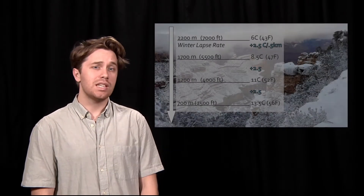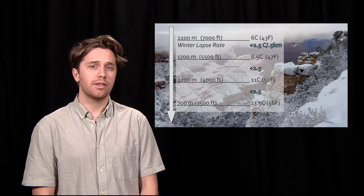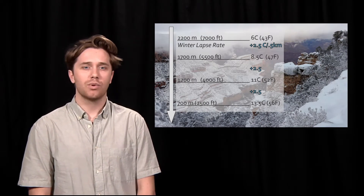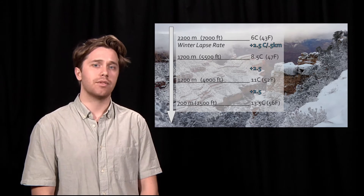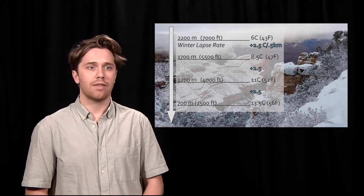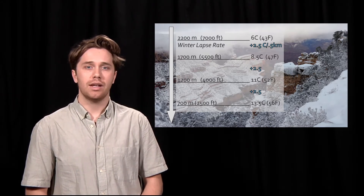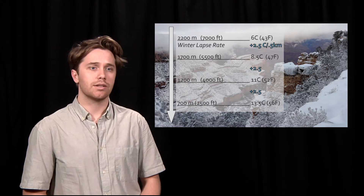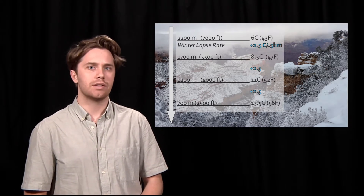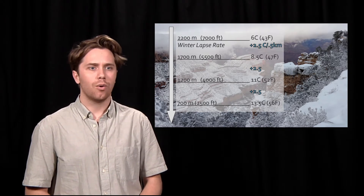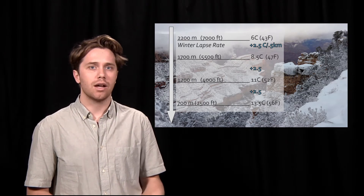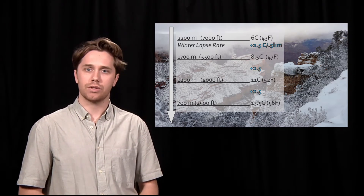This changes seasonally, though. In the wintertime, the lapse rate between the rim and the bottom of the canyon ranges around 5 degrees Celsius per kilometer. So if you started out at the north rim at 6 degrees Celsius, your overall change would be about 7.5 degrees Celsius or about 13 degrees Fahrenheit, not nearly as much as during the summer.